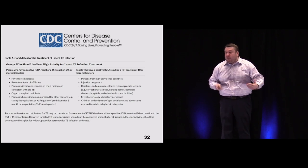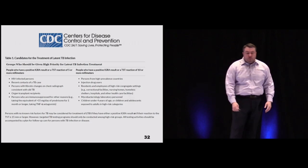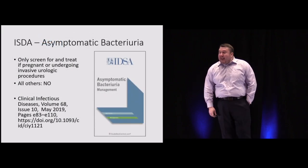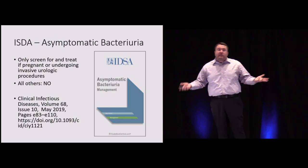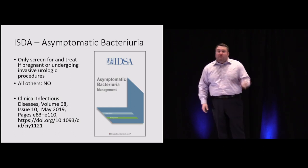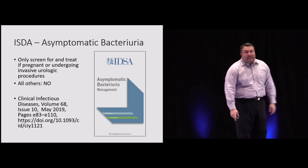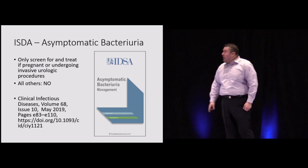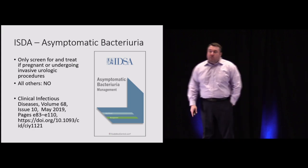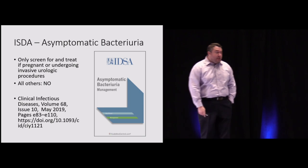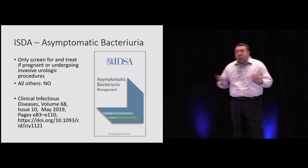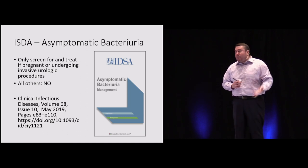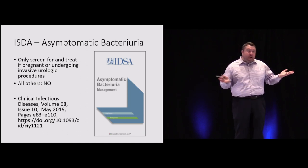For asymptomatic bacteriuria, current IDSA recommendations say do not treat unless the patient is pregnant or about to undergo urological instrumentation such as cystoscopy. Otherwise, watch and wait — don't prescribe antibiotics just because bacteria are found in the urine. Have them follow up in a week for a repeat UA.